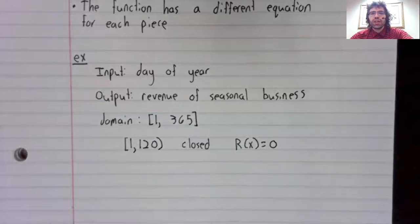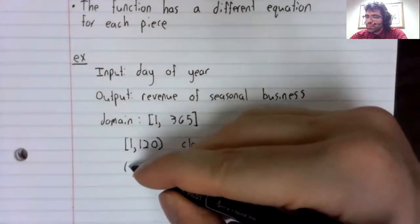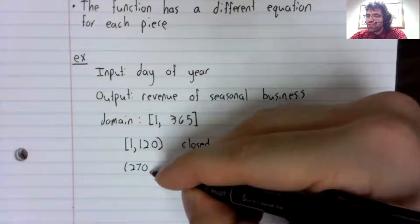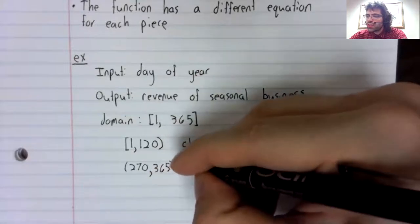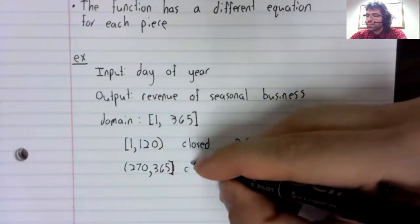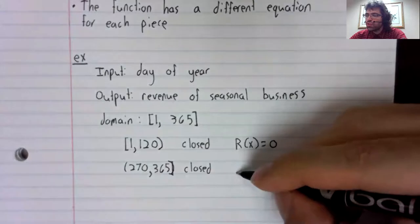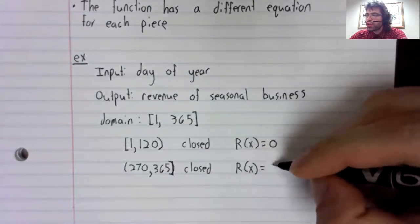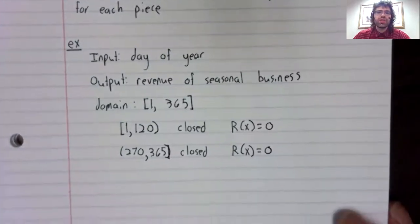And then from day 270 to 365, it is again closed, and the revenue function is again zero.